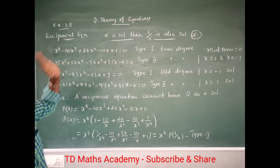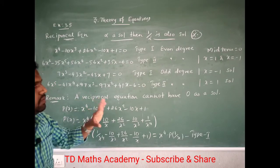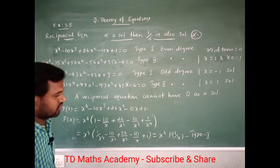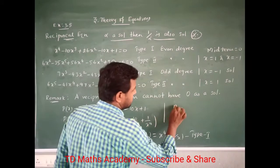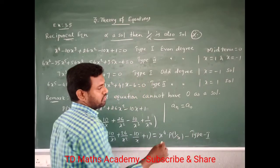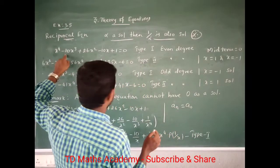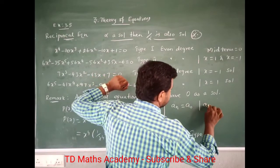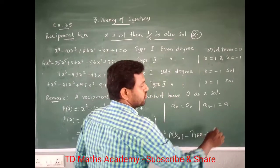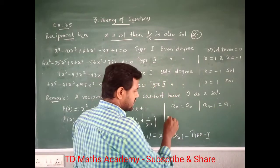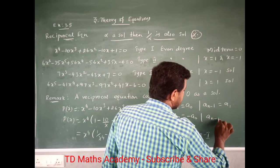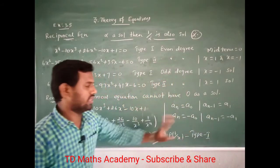So how do you identify the reciprocal equation type? For Type 1: an equals a0 (the leading coefficient equals the constant), and an minus 1 equals a1. For Type 2: an equals minus a0, and an minus 1 equals minus a1. This is the theorem from the book. Use this theorem to solve the problems.